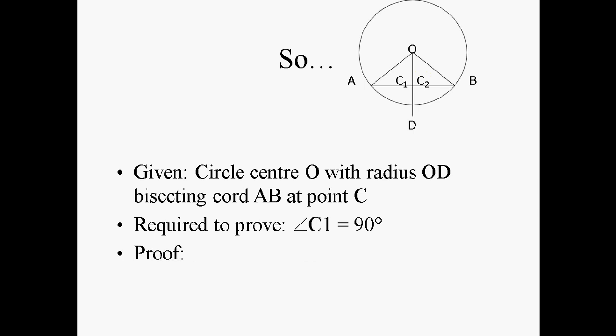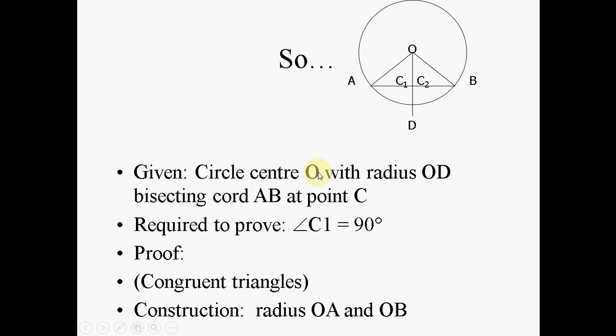And then we write the word proof and we know we are going to base that proof on congruent triangles. To be able to do that proof the first thing we do is construct two triangles by putting down radius OA and radius OB.